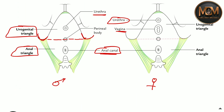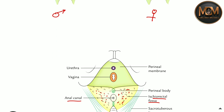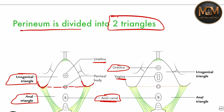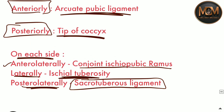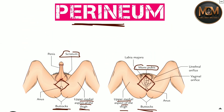In the anal triangle there is the anal canal as well as the ischiorectal fossa present on both sides. The ischiorectal fossa is a fat-filled space that helps in dilation at the time of defecation or during pregnancy. That's all about the perineum. If you like this video, please like, share, subscribe, and don't forget to press the bell icon. Thank you!